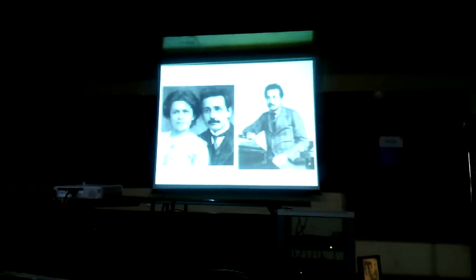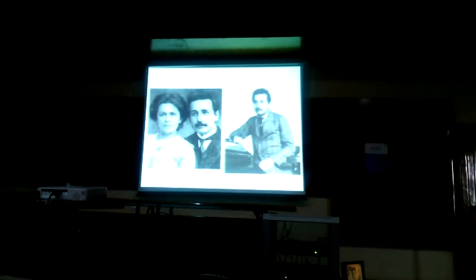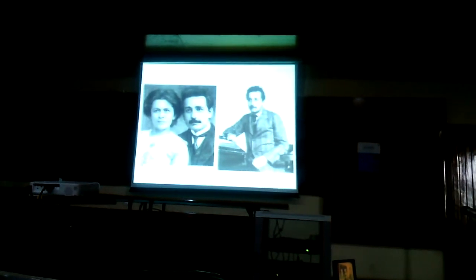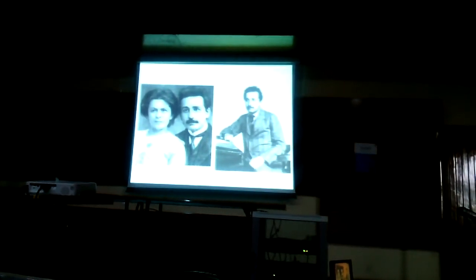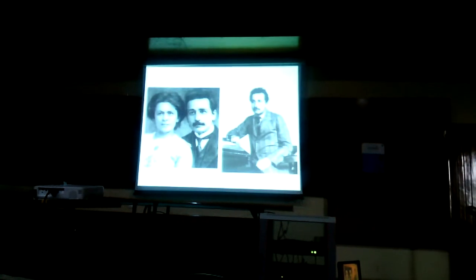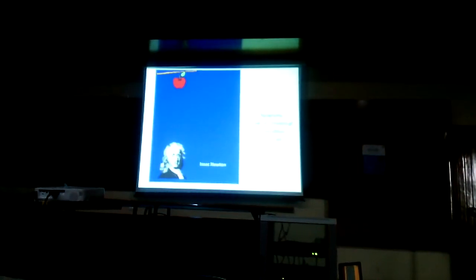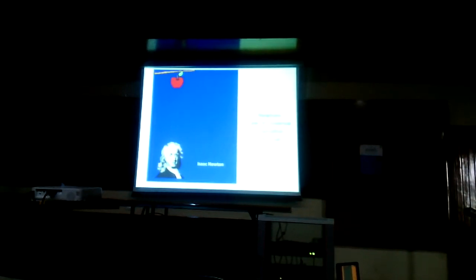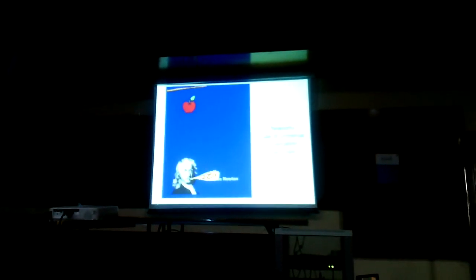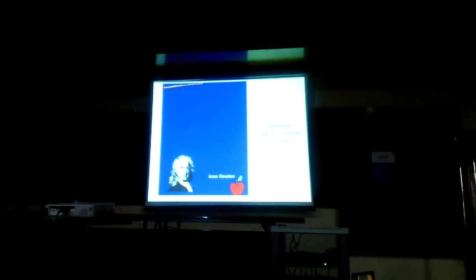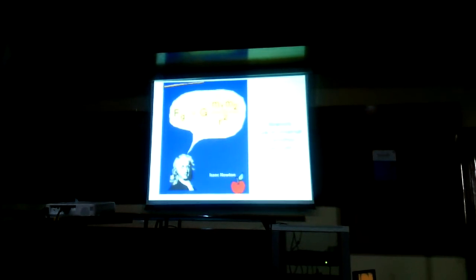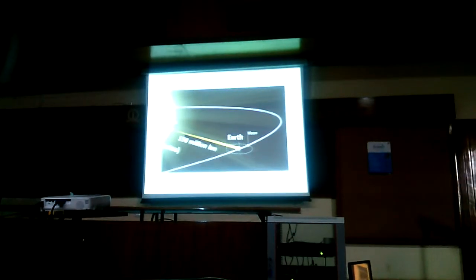The ideas behind gravitational waves had their origins in Einstein's work in 1905. Einstein's special theory of relativity, published in 1905, has as one of its fundamental concepts that nothing can go faster than the speed of light. This discovery created a problem — it had to do with Isaac Newton's universal law of gravitation, because in Newton's law, gravity is instantaneous; there's no delay for propagation.